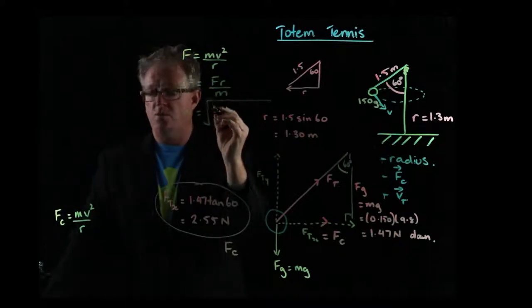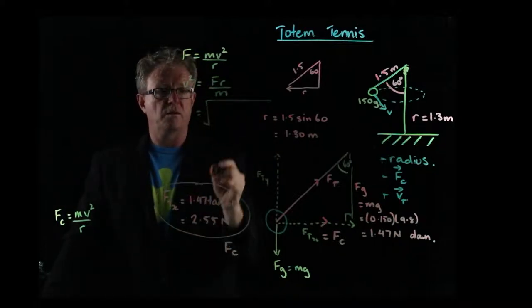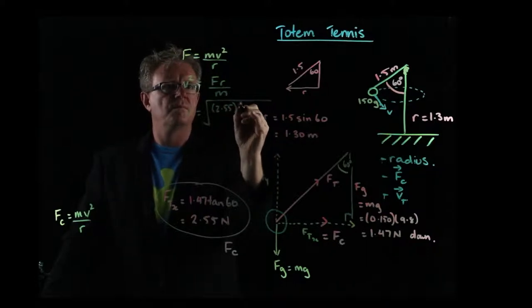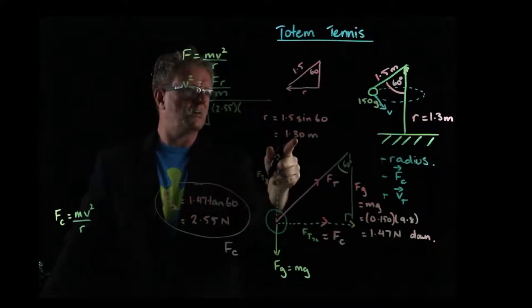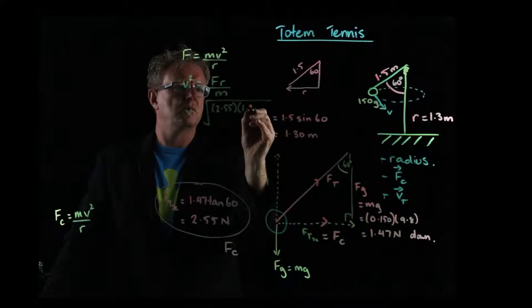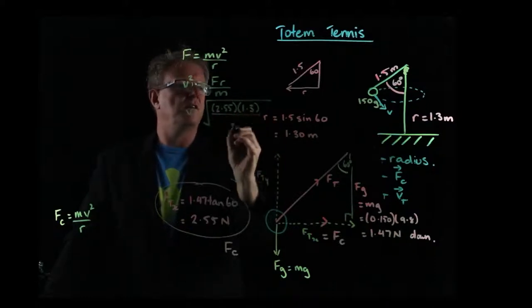And so let's do the force, or the centripetal force we calculated was 2.55, times the radius, we said the radius was 1.3, divided by the mass, which is 150 grams.